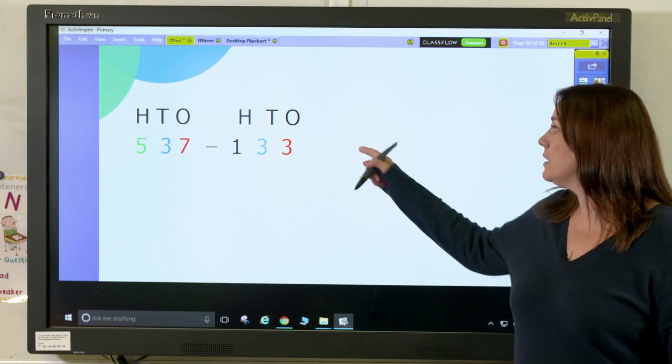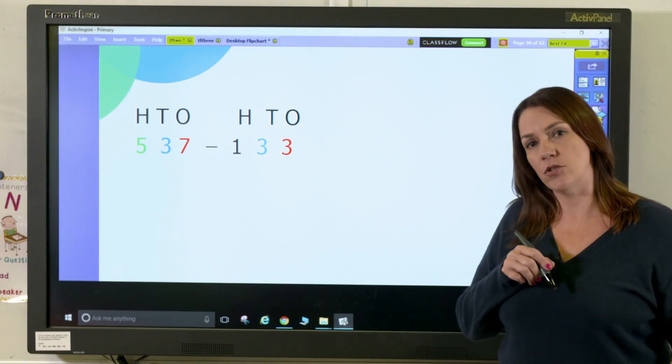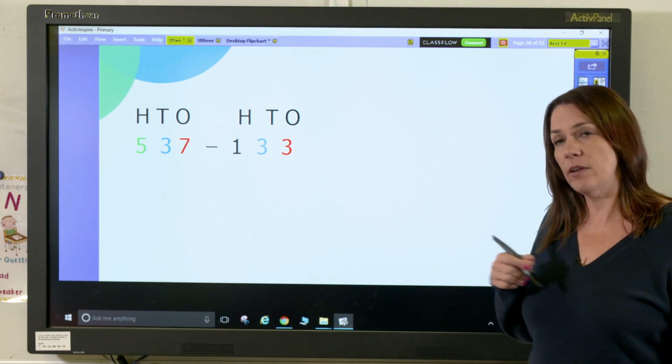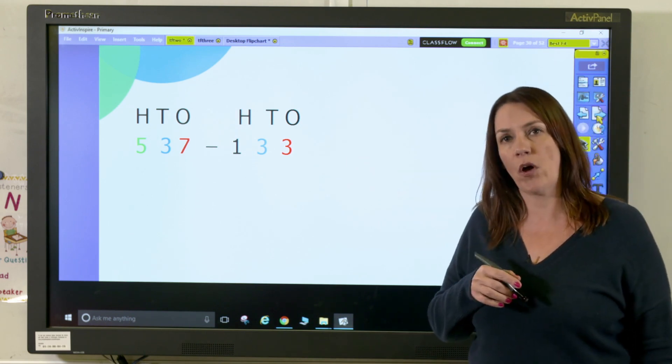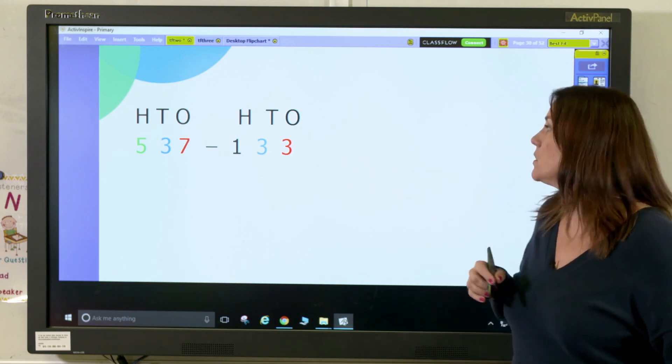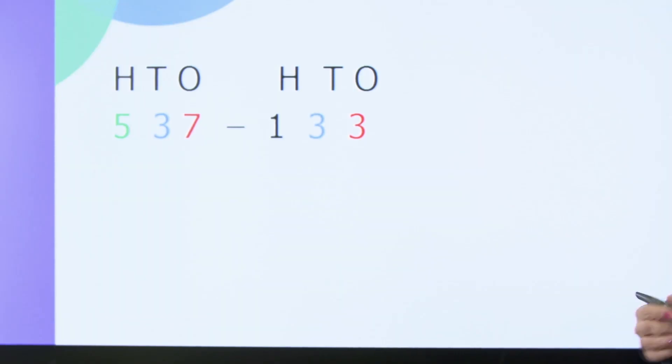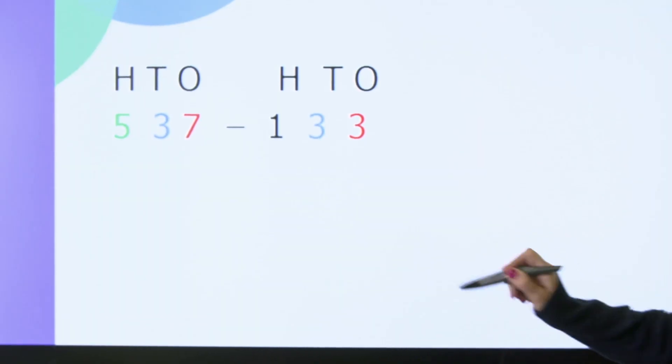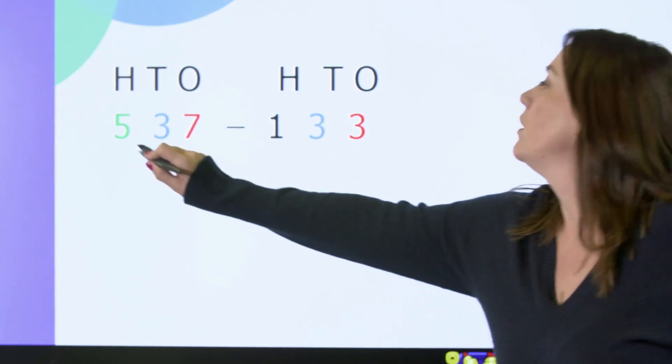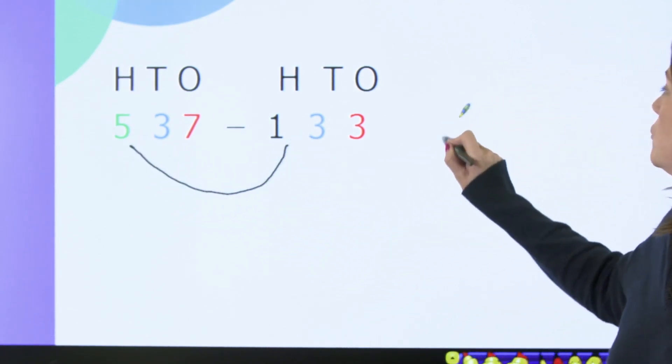This strategy also works with subtraction. Again I can see that I'm not going to need to cross any boundaries so I can do it mentally, and I'm going to carry on using jottings which is fine so that children don't get lost. I'm going to start with the hundreds, it doesn't matter which order you do it in. So I've got 500, take away 100 will give me 400.